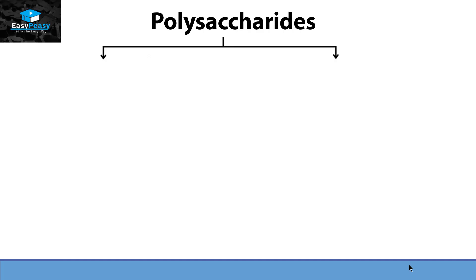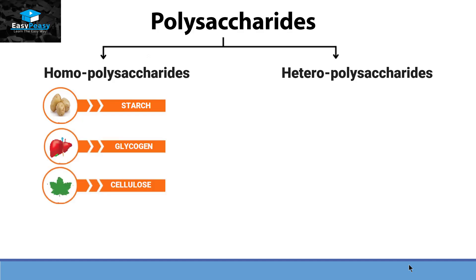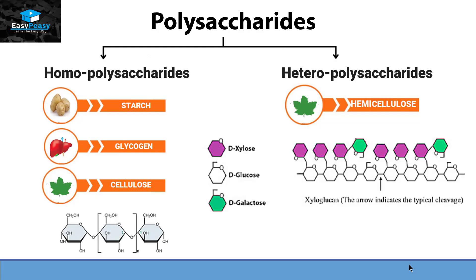Polysaccharides on the basis of the type of monosaccharide present in them can be differentiated into two types: homopolysaccharides or heteropolysaccharides. Homopolysaccharides have the same monosaccharides in them, just like starch, glycogen and cellulose — all have the same monomer, which is glucose. In heteropolysaccharides, we have various different monosaccharides attached with each other, like hemicellulose or xyloglucan, which contains more than one type of monosaccharide.